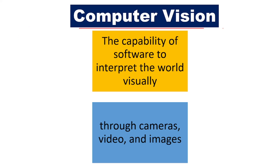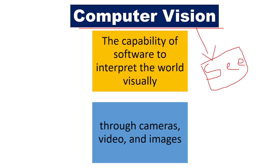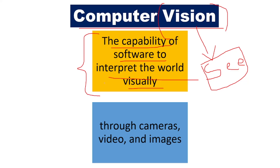Next is Computer Vision. What is computer vision? Vision means the ability to see the world. We use our vision to see the world. Similarly, computers don't have any eyes, but using computer vision, it is the capability of the software to interpret the world visually. Using computer vision, the computer can interpret the world visually — it will be able to see what's happening around it through cameras, video, and images.